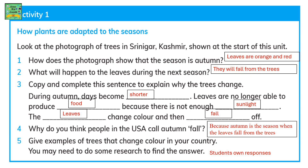There is a photograph of trees present in Srinagar, that's in Kashmir, shown at the start of this unit. You need to look at the photograph and answer these questions. How does the photograph show that the season is autumn? The leaves are orange and red — that's how we know it's autumn.